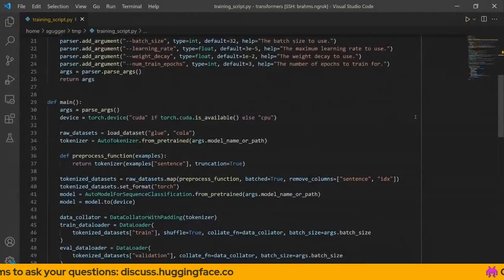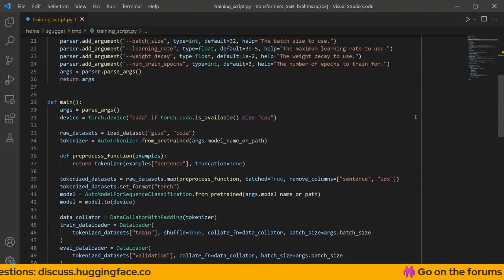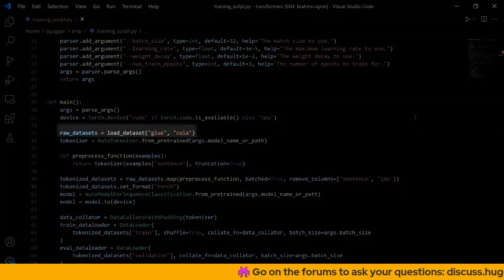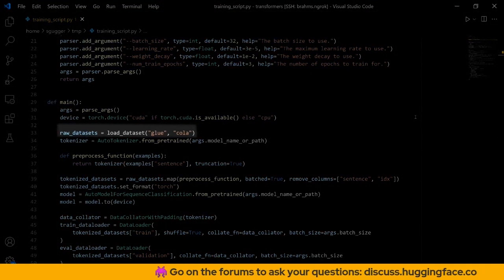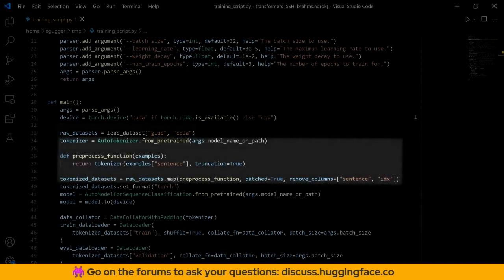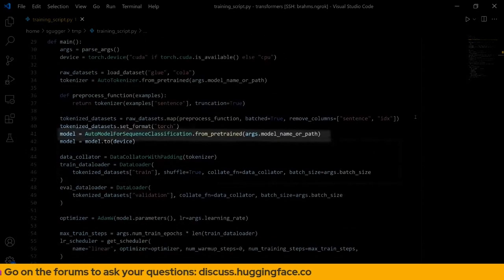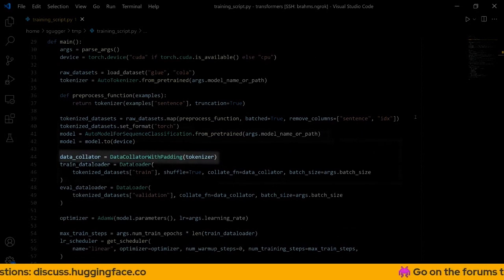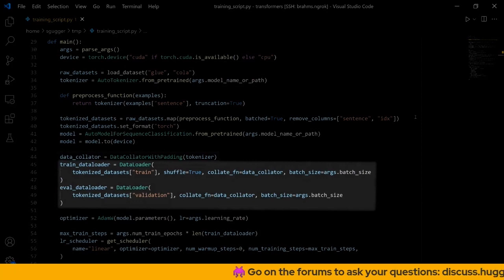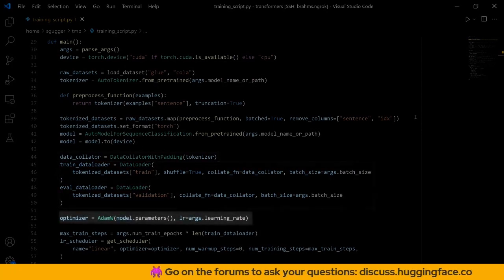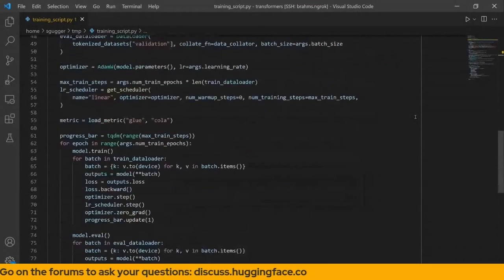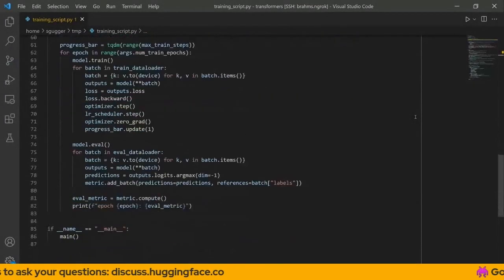For this talk, I've written a small script that fine-tunes the BERT model on the Glue CoLA dataset. To go over it quickly, I load the dataset using the HuggingFace datasets library, preprocess it by tokenizing everything, load my pre-trained model, create a data collator that will pad the examples dynamically to the longest one in each batch, create my training and validation data loaders, my optimizer, a learning rate scheduler, then go over a traditional PyTorch training loop with an evaluation at each epoch.